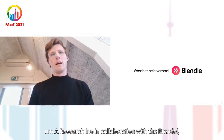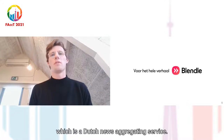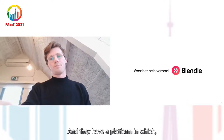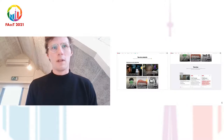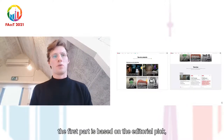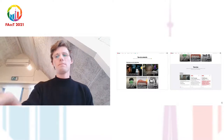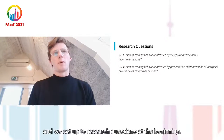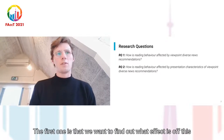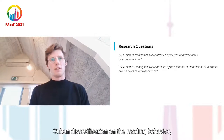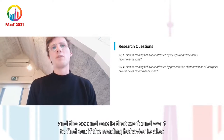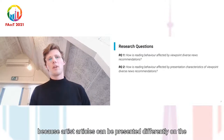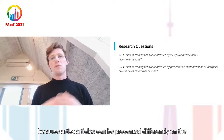That's why we set up research in collaboration with Blendl, which is a Dutch news aggregating service. They have a platform where, for a monthly subscription, users get around 20 to 25 news articles — the first part based on an editorial pick and the second on a recommender system. We set up two research questions: first, what is the effect of viewpoint diversification on reading behavior; and second, whether reading behavior is also affected by presentation characteristics, such as whether articles are shown with or without a thumbnail image.